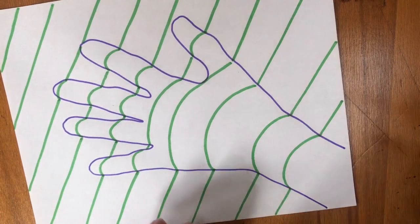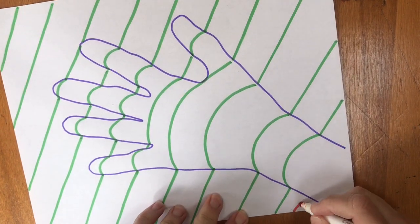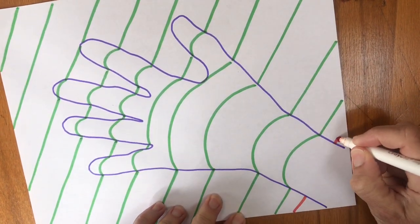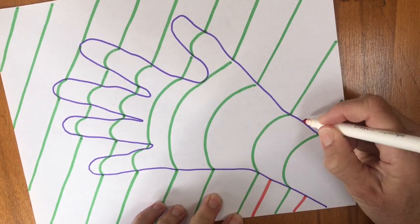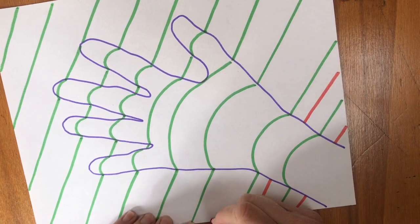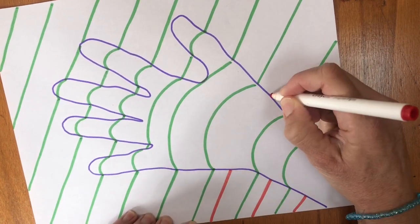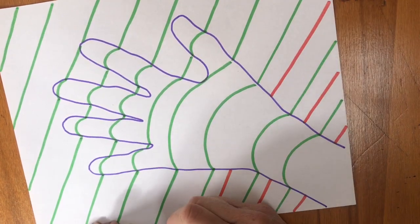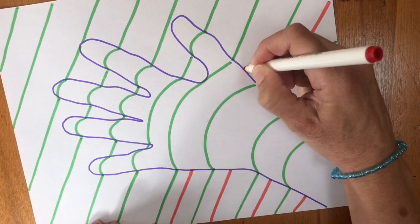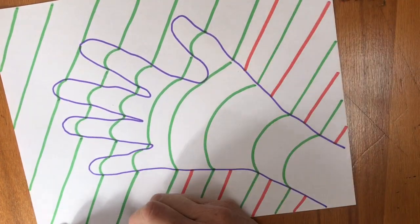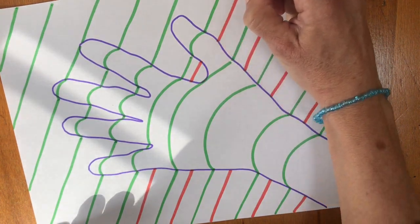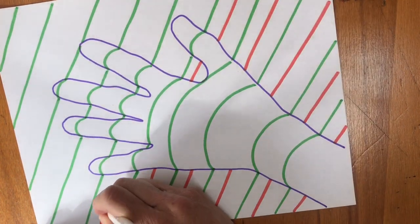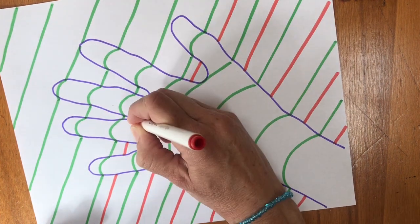So now I'm going to add red lines in between the green, and again I'm not going to cross over my hands with my straight lines. I'm just going straight in between the green lines. Like I said, you can use one color for this like I did with my first one, but you can also use multiple colors and keep adding more if you want to.